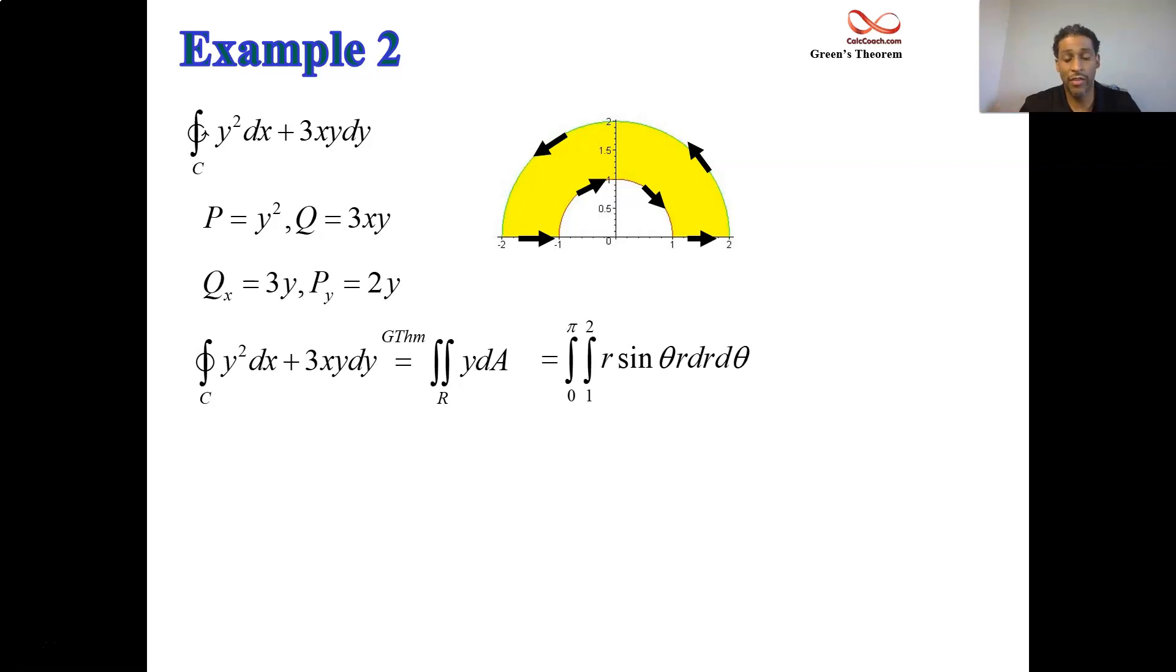All right, quick little integration. Actually, this is separable where we have r squared times sine theta is a product of two functions, each single variables of different variables, and the bounds are numerical. This combination allows you to be able to do two separate calc 1 integrals, single variable, and then you could multiply them together, the results.